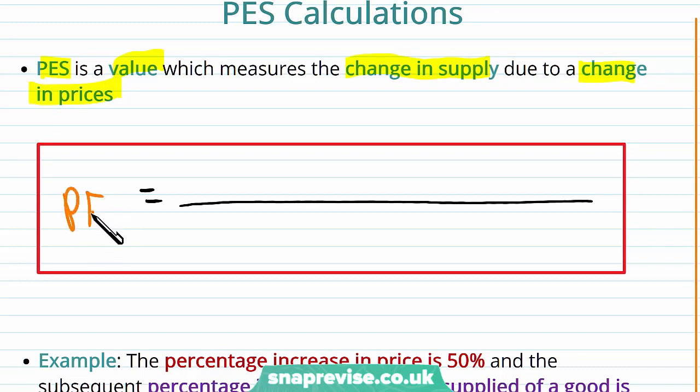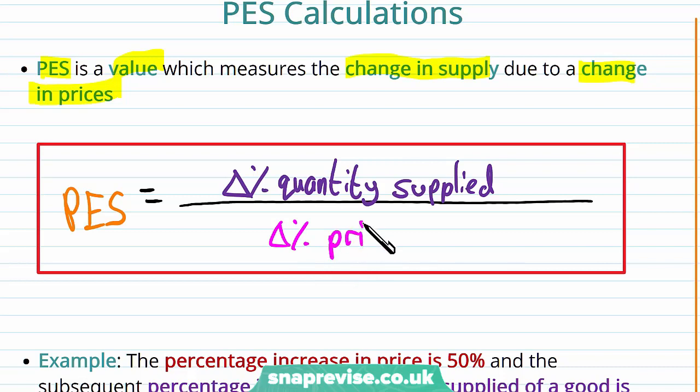Well, we're going to start off with PES on the left hand side. And then on the top, we will have percentage change in quantity supplied. And then below in the denominator, we're going to have the percentage change in the price. And these are all going to be related to our goods.